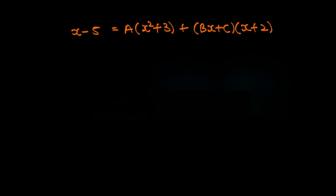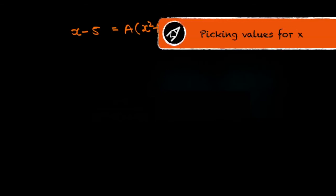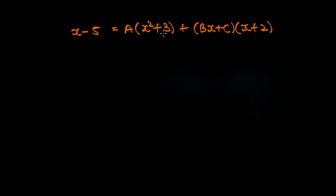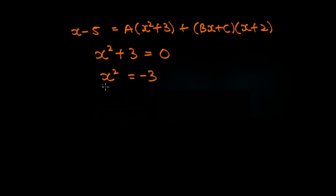At this point, we can either plug in values for x or we can equate coefficients, and in this video I'm going to show you both. Starting by picking values for x — is there a value for x for which x squared plus three is equal to zero? Well, that would require x squared equals minus three, and there is no real solution to this equation. Therefore, we should instead look at our other factor, x plus two.